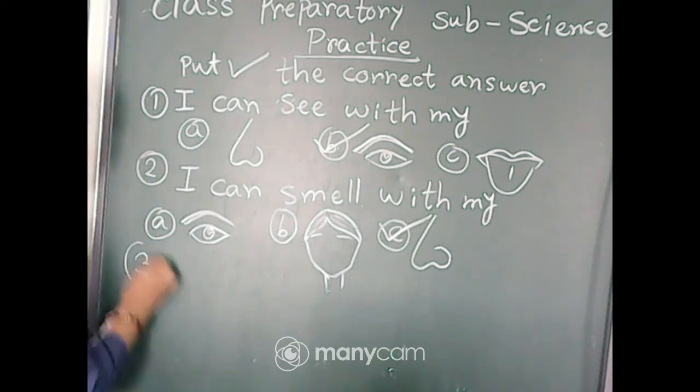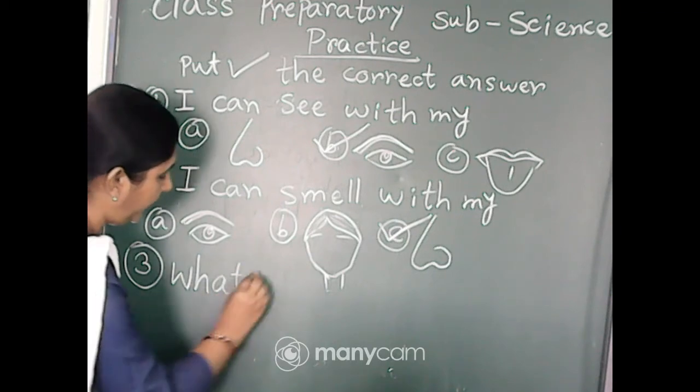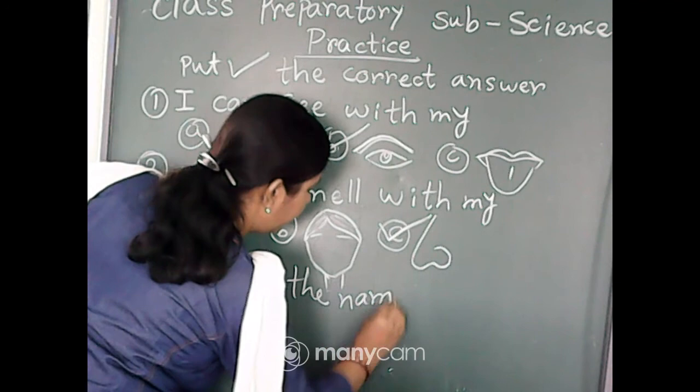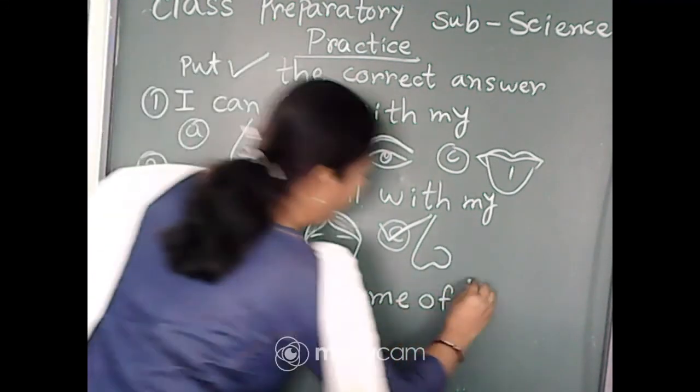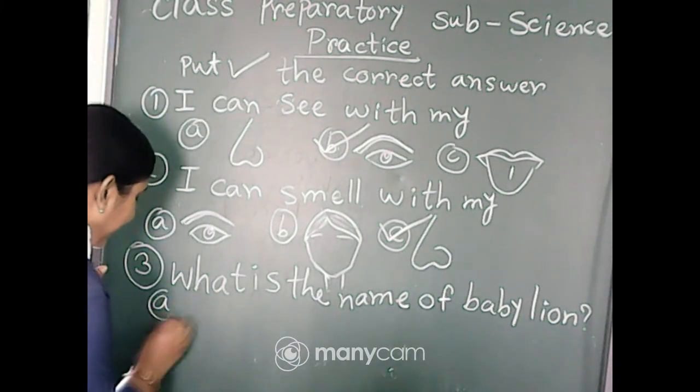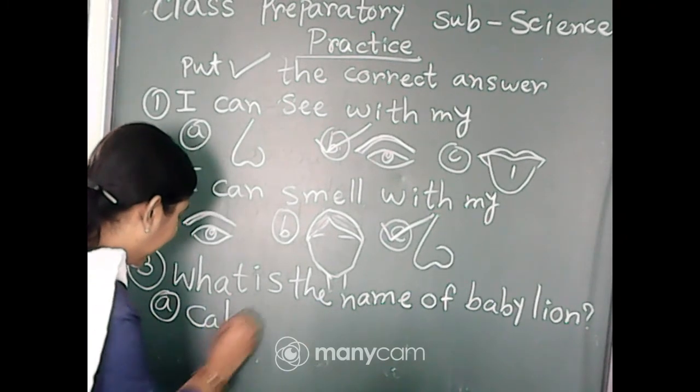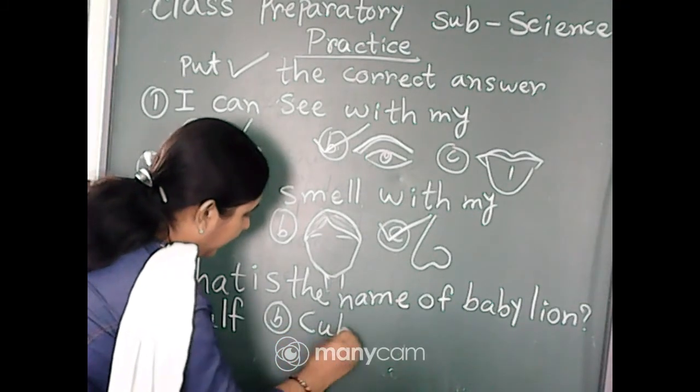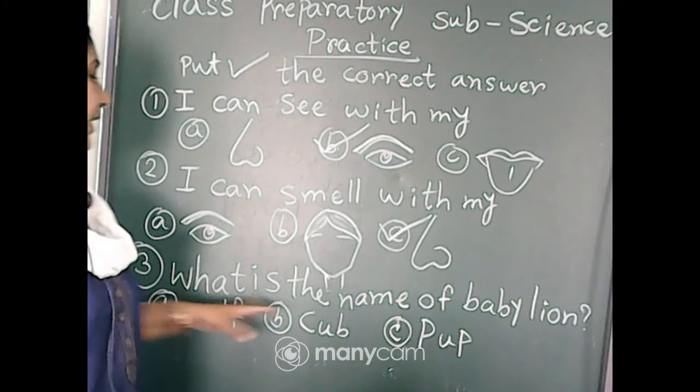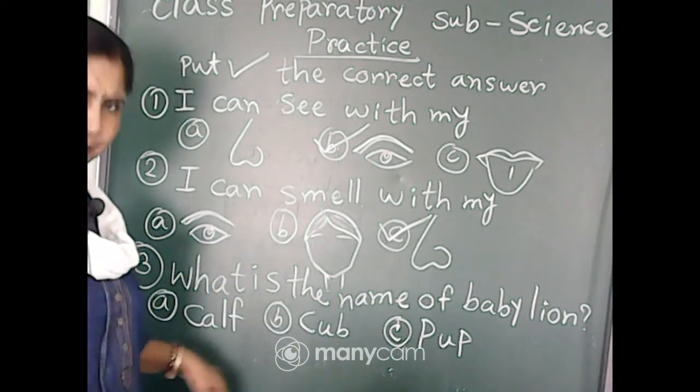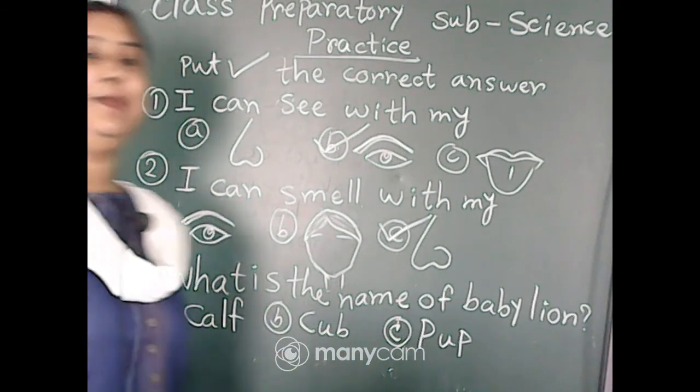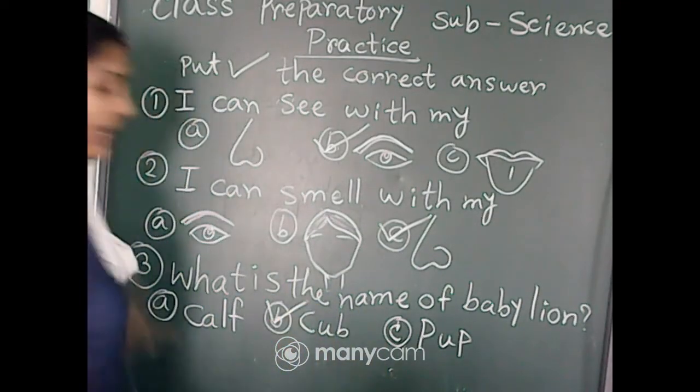Now we move to number three: What is the name of baby lion? Option A is C-A-L-F, calf. Option B is C-U-B, cub. And option C is P-U-P, pup. Which one is the correct answer? The baby lion is called cub. It is cub, yes it is cub. The baby lion is called cub, so I put here B, the correct answer.